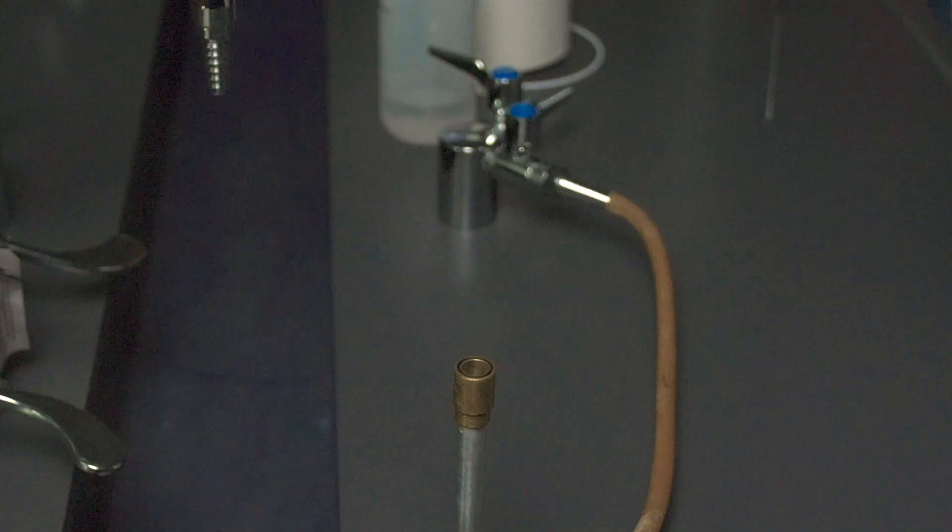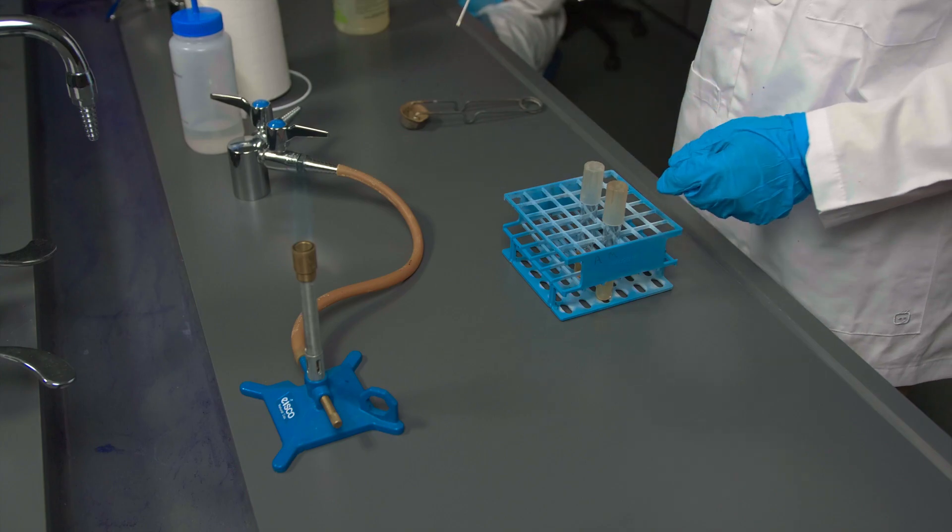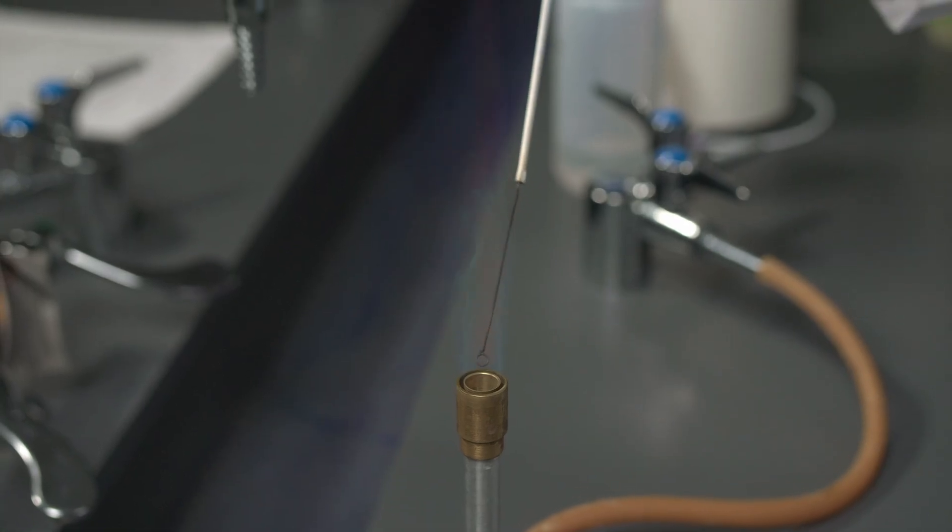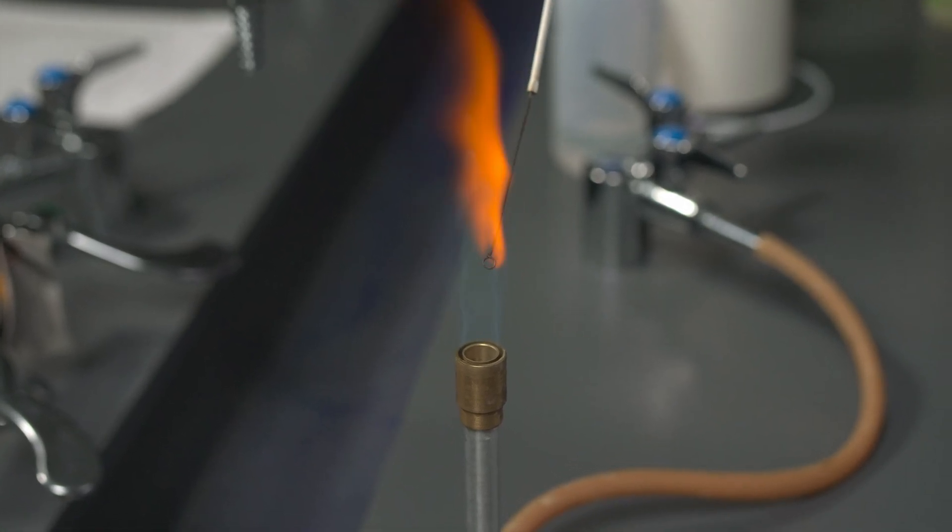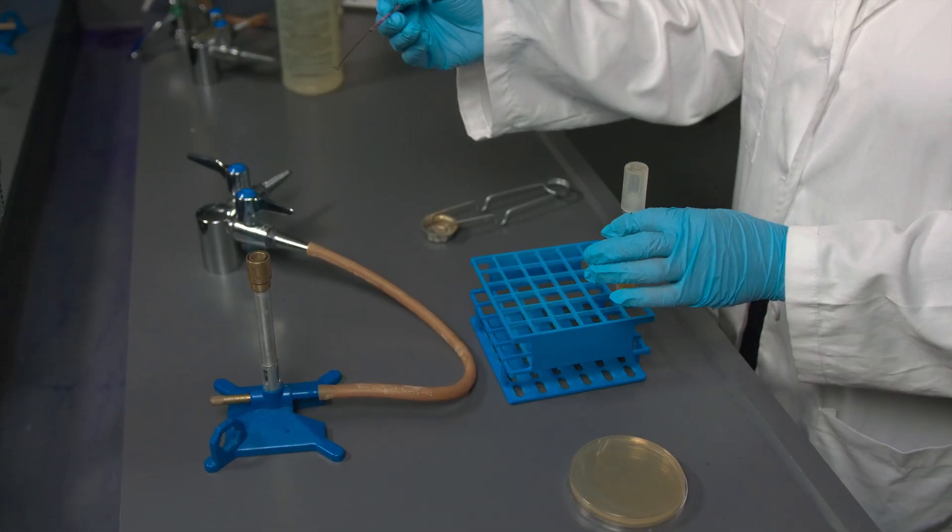Light the Bunsen burner. Flame the loop to sterilize it. Grab the broth tube that contains the bacteria.